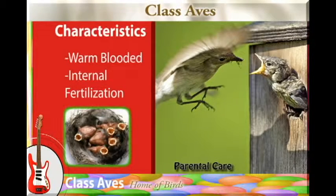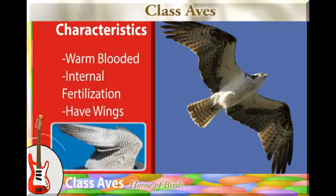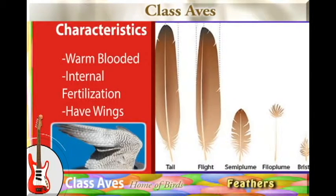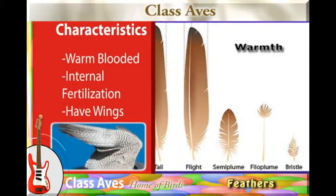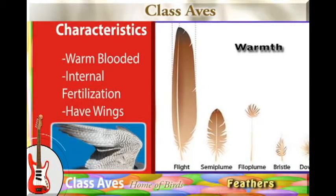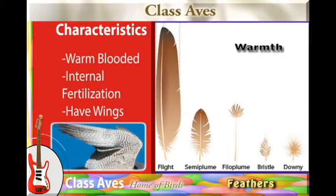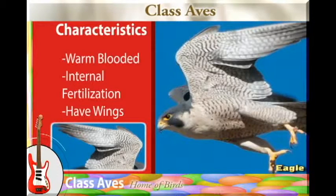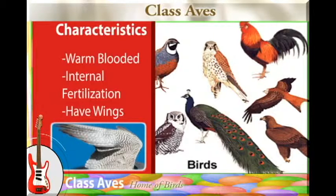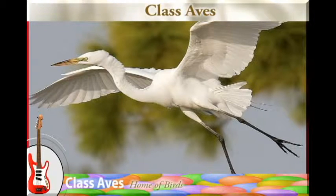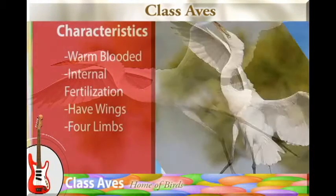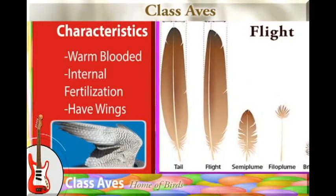The organisms in this class have wings covered with feathers. These feathers are responsible for maintaining the warmth of the organism and are also used for flight when they are flying. The bird class has four limbs, but the four limbs have been modified for flight, having developed feathers that help during flight.